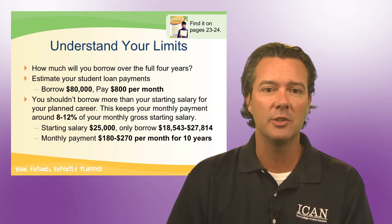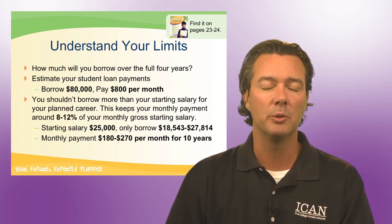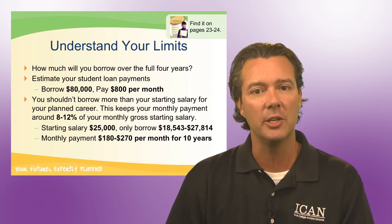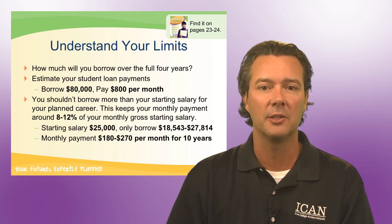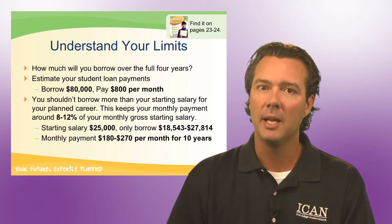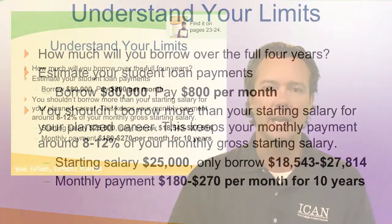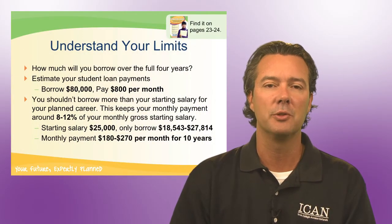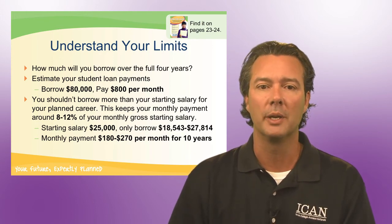We want you to understand your loan limits. If you borrow $80,000, you'll need to pay that back over a 10-year period — which is what most student loans are — at $800 per month. We don't want you to borrow any more than 8 to 12% of your starting salary. If you're looking at a job with a starting salary around $25,000, then you should only be borrowing $18,000 to $27,000 over your college career. A lot of students get into trouble over-borrowing for those indirect costs.